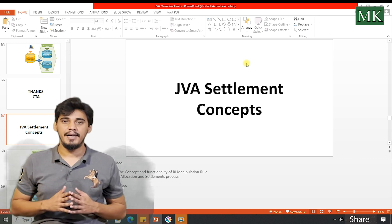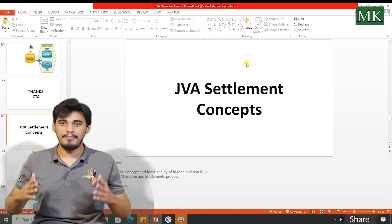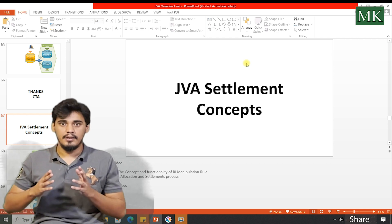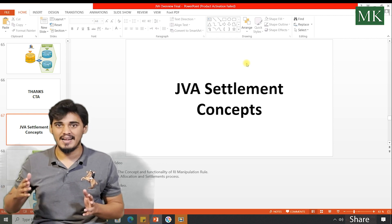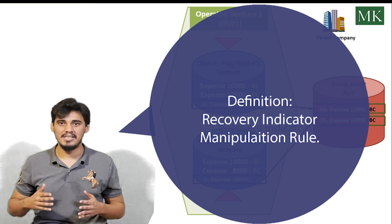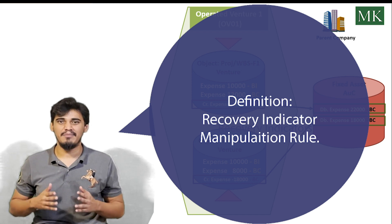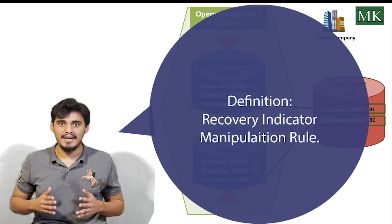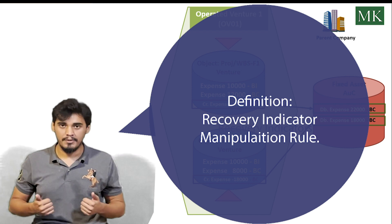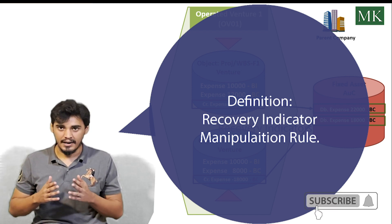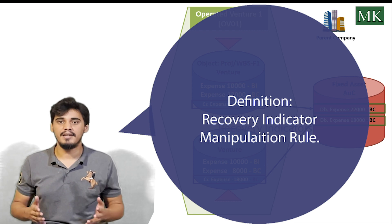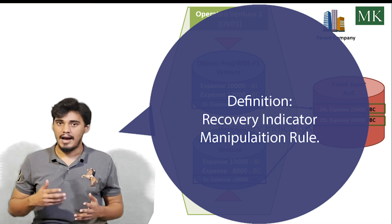Welcome to the video. In this video I will explain the concept and accounting for the recovery indicator manipulation rule, which is used in joint venture accounting mainly for the allocation and settlement process. The recovery indicator manipulation rule field allows you to define the rule that indicates how the recovery indicator for sender and receiver would be determined. These recovery indicator manipulation rules are pre-configured in SAP, but you can configure them as per your need.